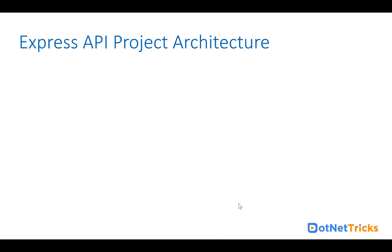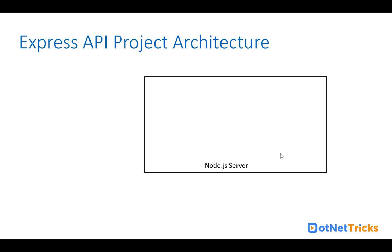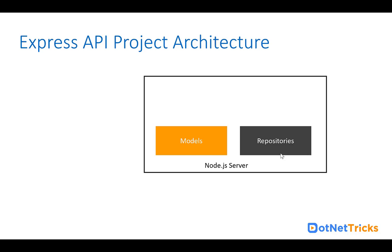Let's understand the Express API project we are going to build in this training program. We will create a NodeJS server because ExpressJS is built on top of NodeJS. We will define the models using Mongoose, which is an ODM that helps us query MongoDB in an object-oriented fashion. We will also implement a repository design pattern so that we can reuse our query logic without rewriting it again and again. For the database, we will use MongoDB, queried with the help of Mongoose.